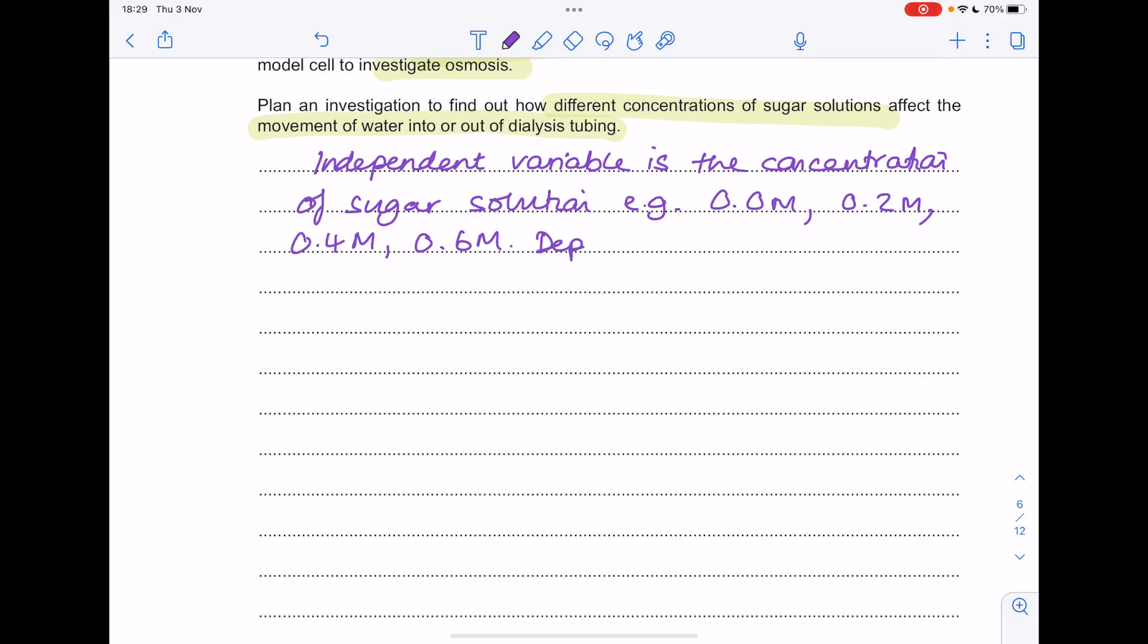What about our dependent variable? What are we measuring? The volume of water remaining in the dialysis tubing. Let's add a detail here: use a measuring cylinder to determine this.